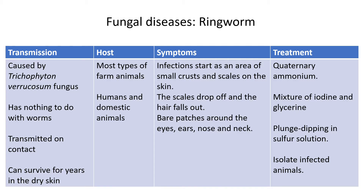Your hosts are mainly most types of farm animals — even humans can get it — as well as domestic animals like dogs and cats, and livestock like cattle and pigs. The main symptoms are: the infection starts as an area of small crusts and scales on the skin. The scales usually drop off and the hair falls off.